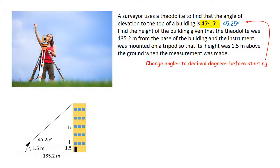The theodolite was 1.5 metres above the ground and so the building's height is going to be 1.5 metres more than h.